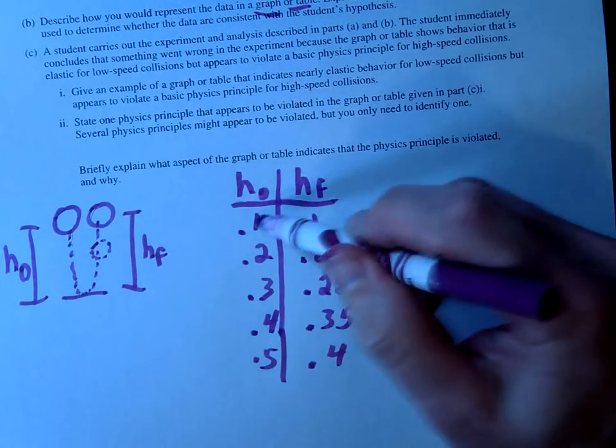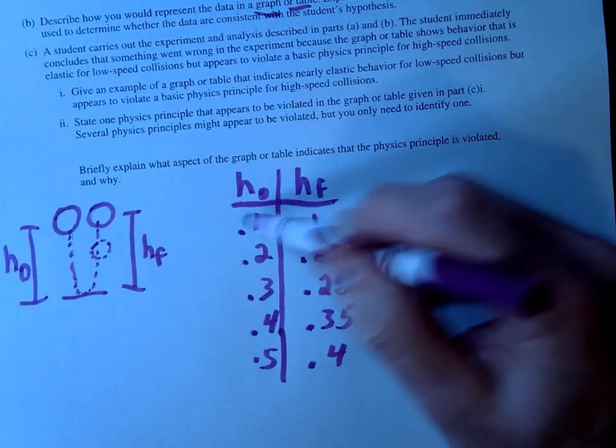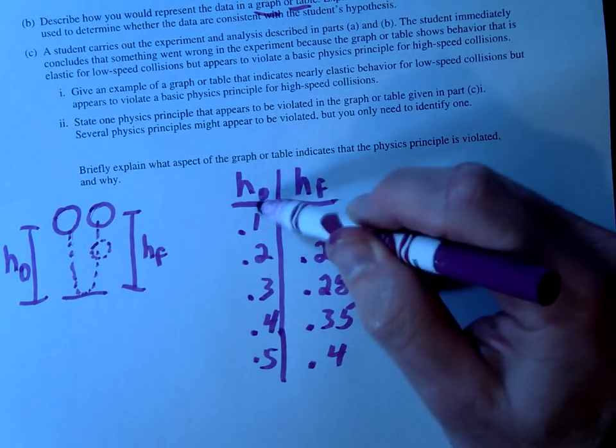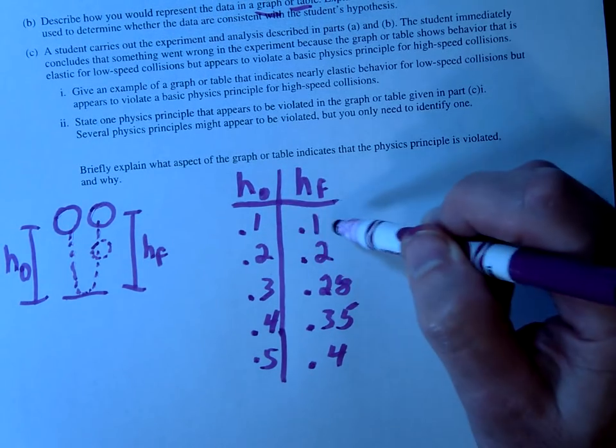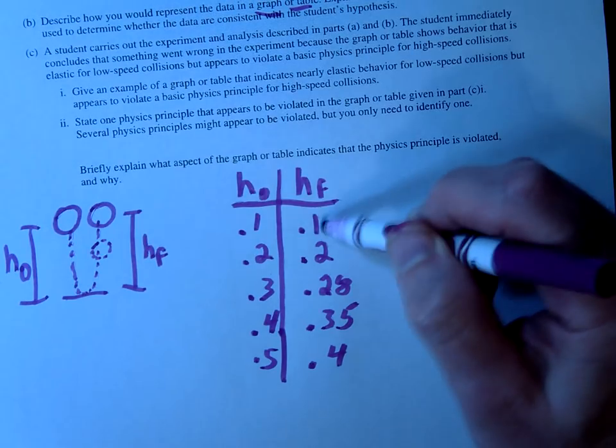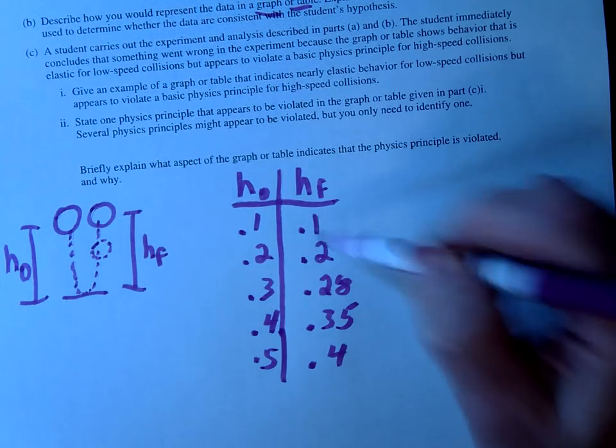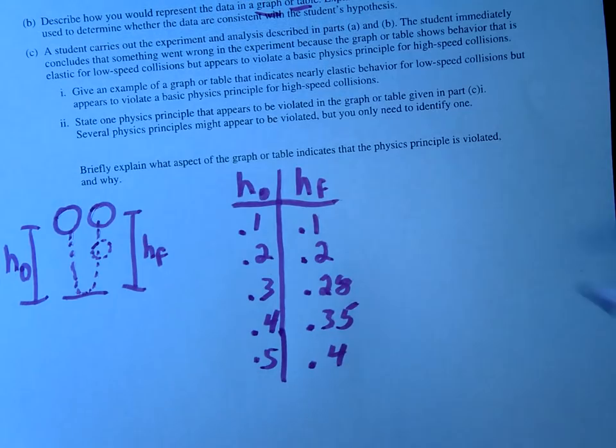So this would be showing for small heights, which would mean small velocities, which would mean it ends up going to the same height, ending with the same energy, so it's perfectly elastic here. And then in this case, it's not.